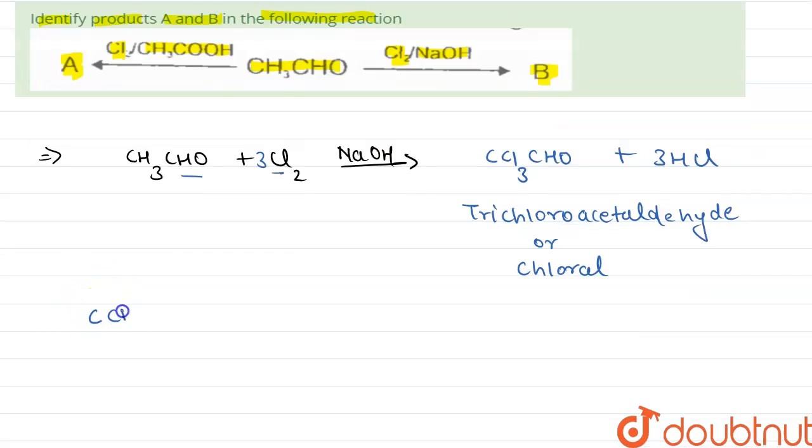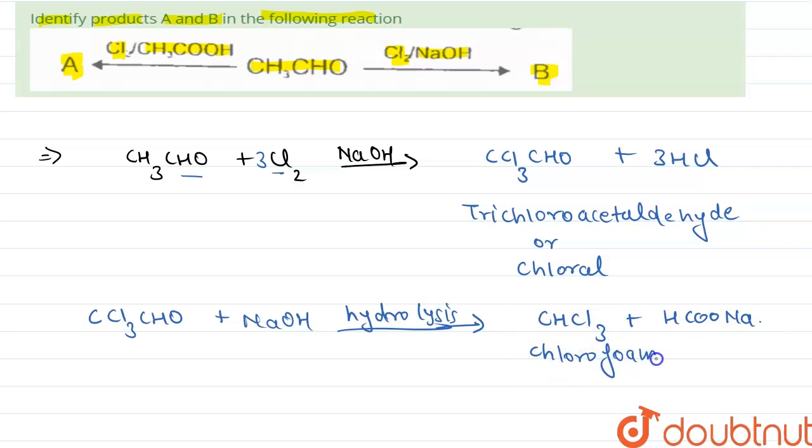Now this chloral, CCl3CHO, in presence of NaOH undergoes hydrolysis to produce haloform, that is the chloroform CHCl3, plus HCOONa, that is the salt of carboxylic acid. This is chloroform, and this is sodium formate.